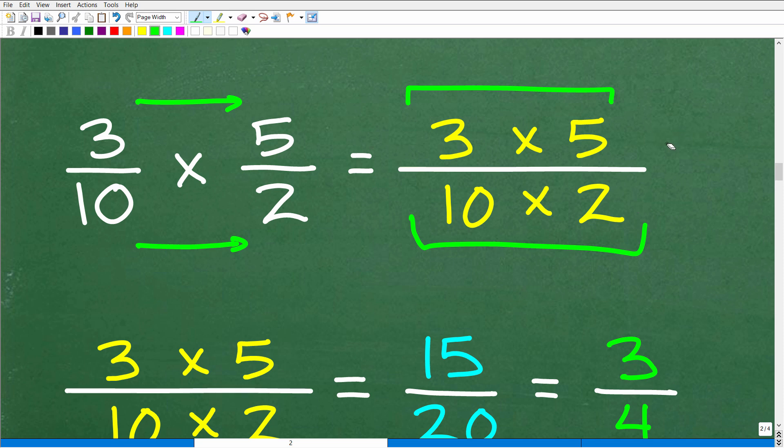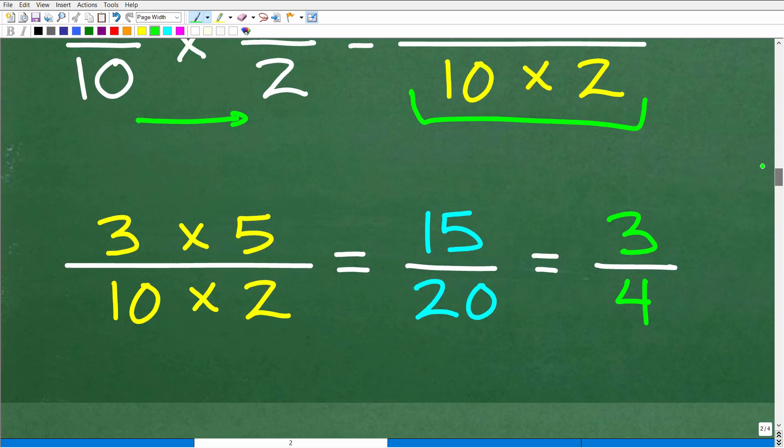We'll figure this out. And then 10 times 2 will be our denominator. All right, so I'm just taking it nice and slow here for those of you that might be a little bit rusty on fractions. So let's go ahead and clean this up. So 3 times 5 over 10 times 2. Most of you can see what the answer is going to be. So 3 times 5, of course, is 15. 10 times 2 is 20.